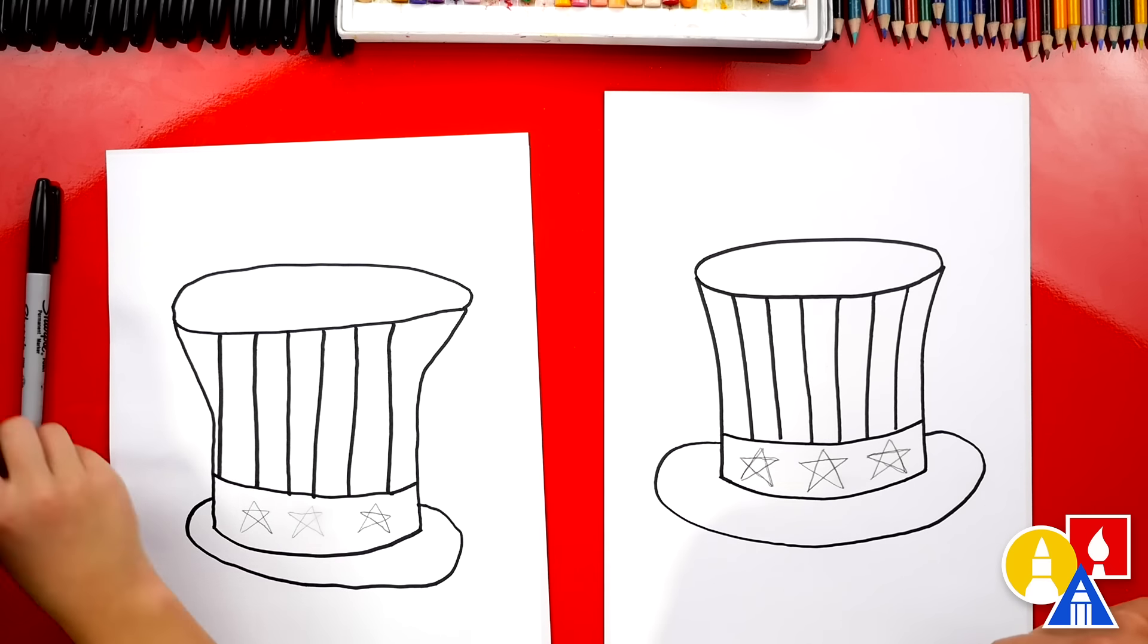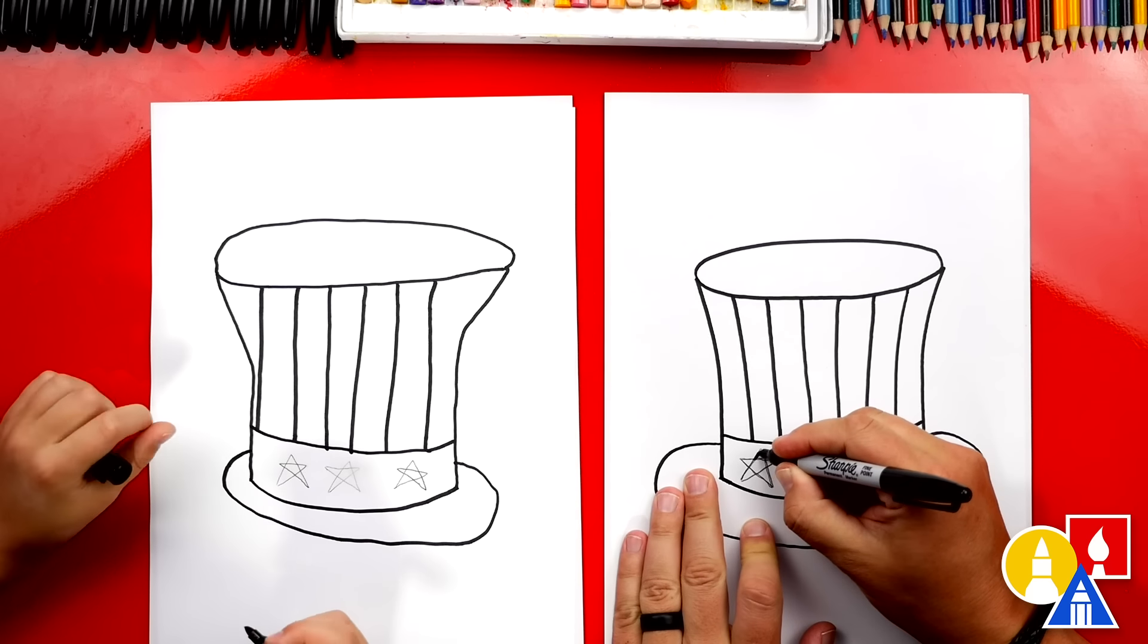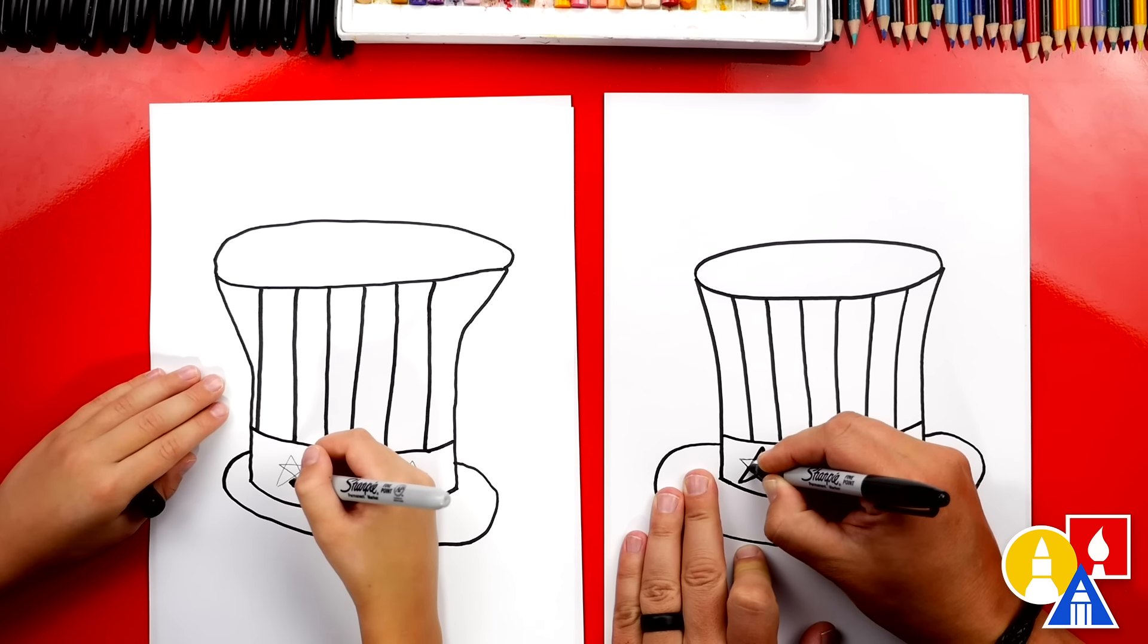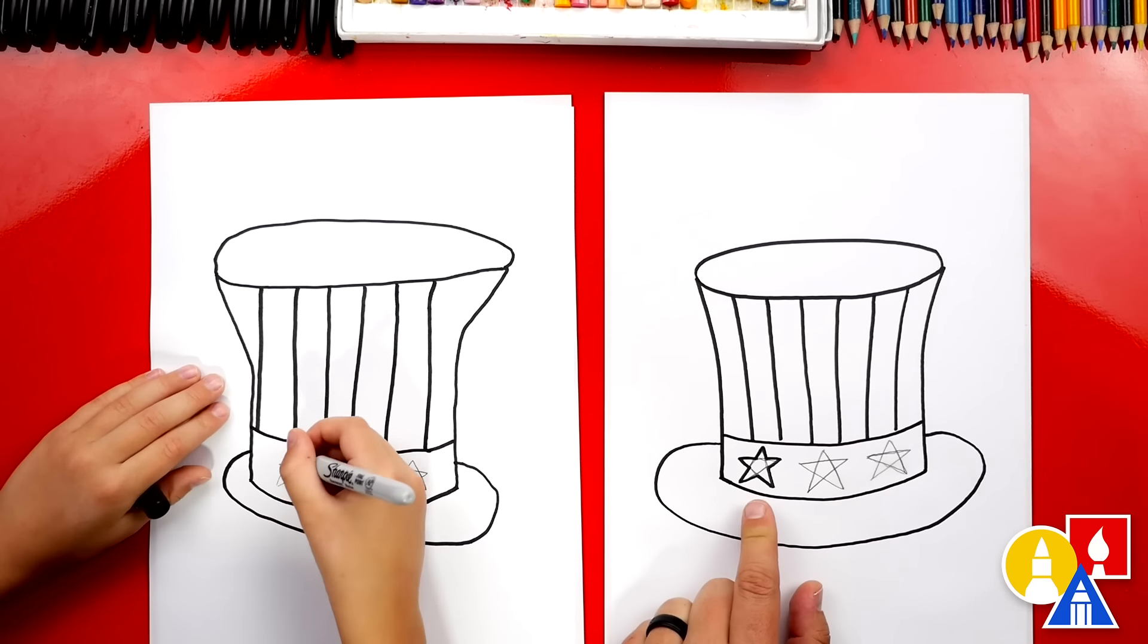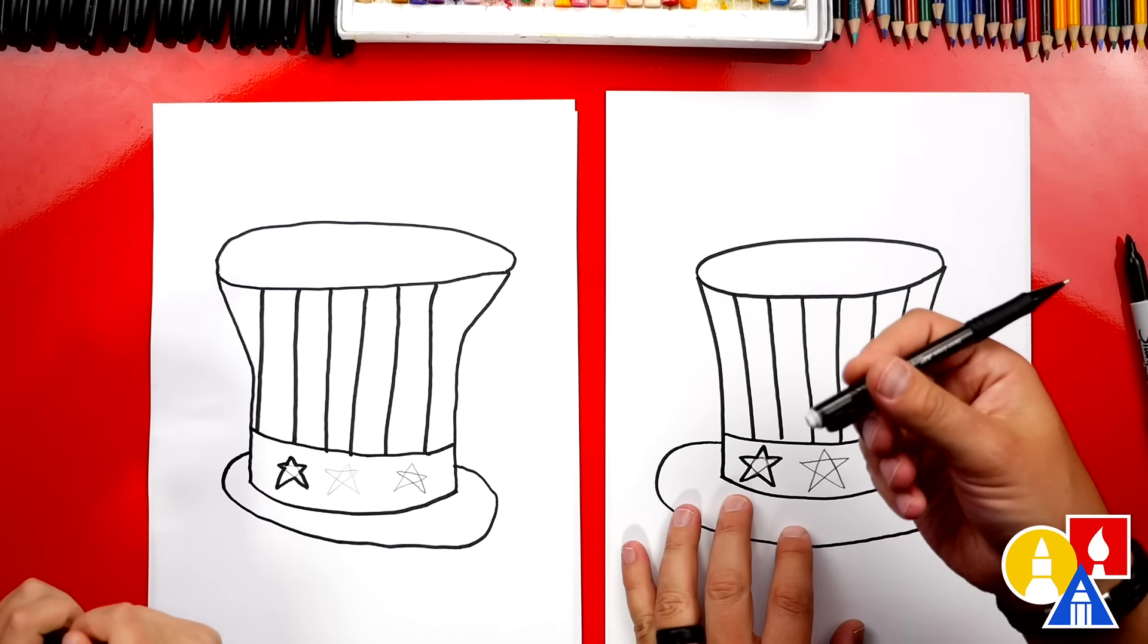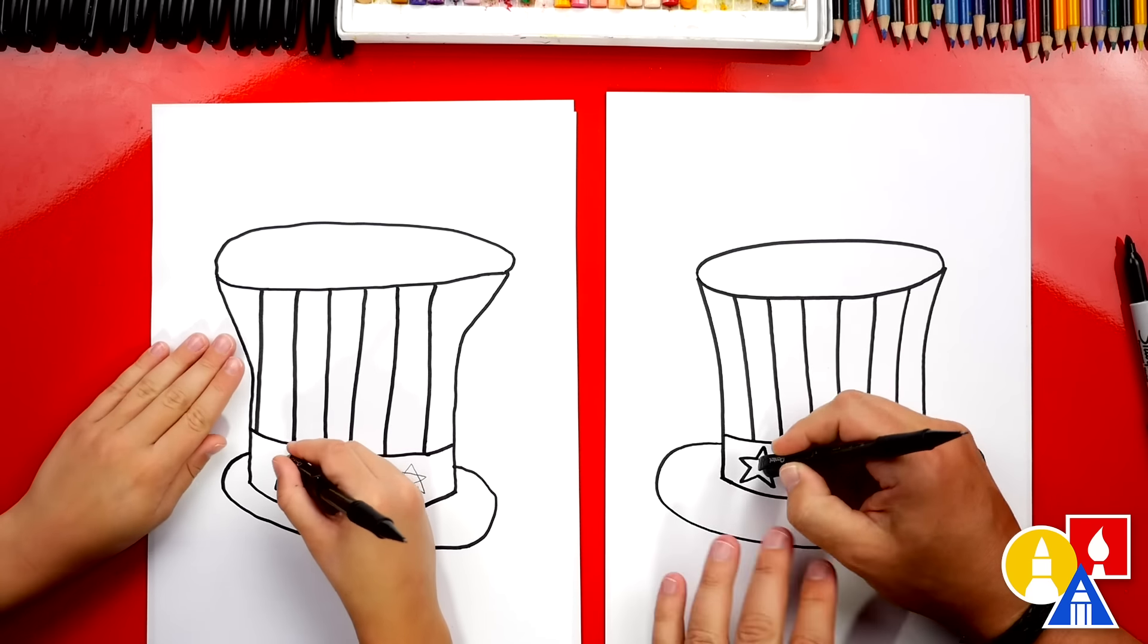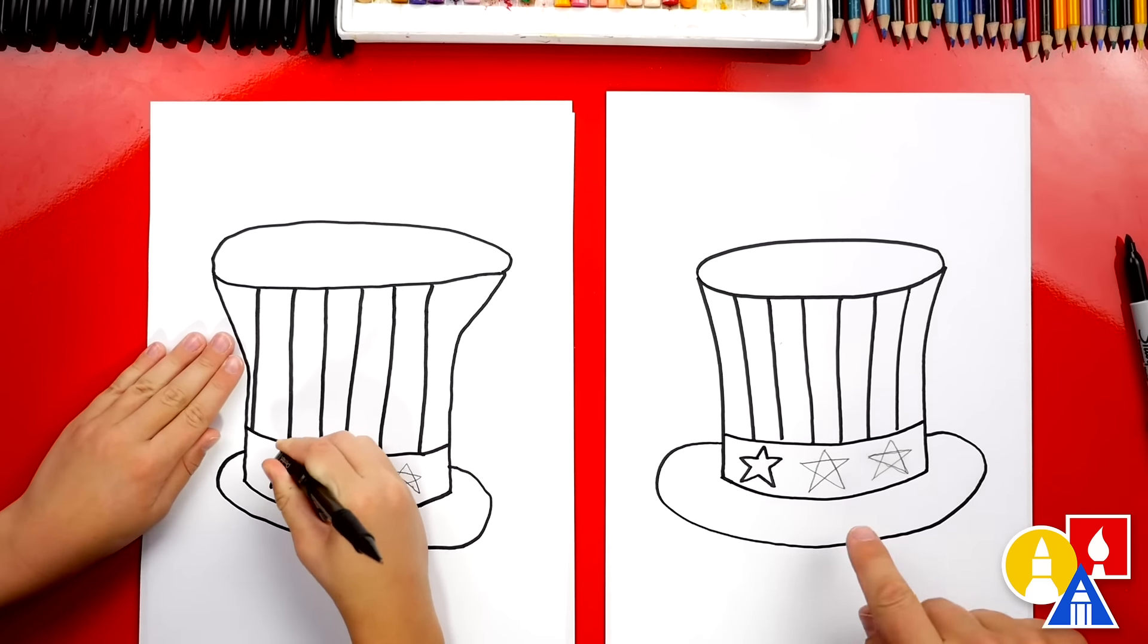Now let's switch back to our marker and we're going to go around the outside of our star. So watch me first. I'm going to go up, down, and we'll go around each of the little points on our star like this. But we're going to make sure that we don't go over the pencil lines on the inside of the star. Now we can switch back to our pencil or the eraser and we're going to erase the guidelines inside of our star. Look at that. That looks really cool. Let's fast forward one more time and do the same thing for the other two stars.